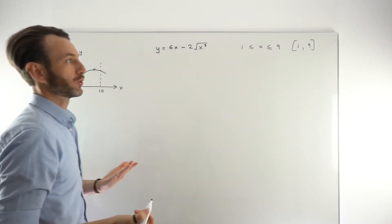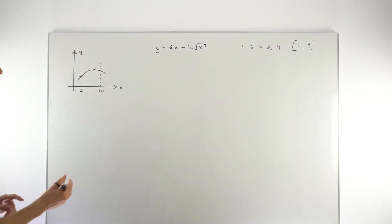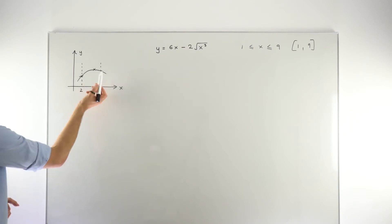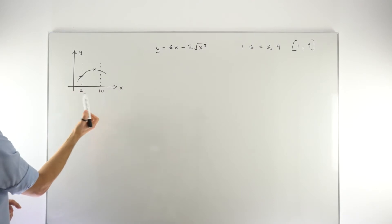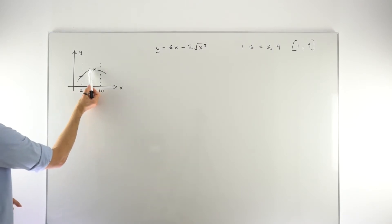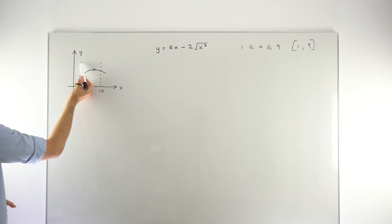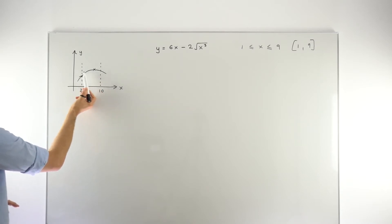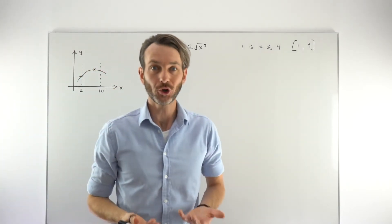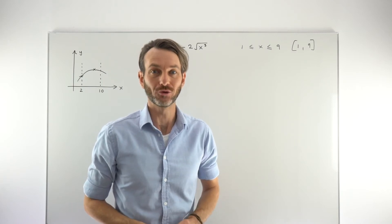Sometimes in these questions you also have to state the x values. In my made-up example, the minimum value occurs at one point and the maximum value occurs at another. Notice that one of these points is on the edge of our range of values — at one of the endpoints — and the other point is not at an endpoint but is a stationary point, a turning point. So these questions are basically just an application of stationary points.